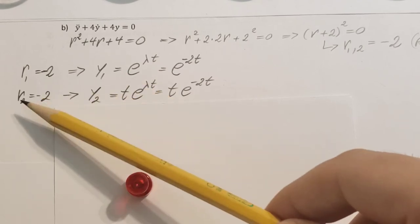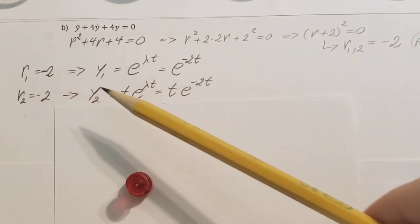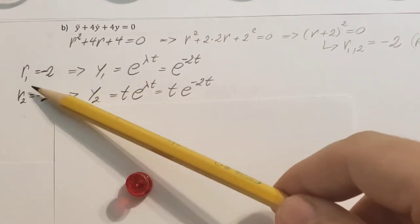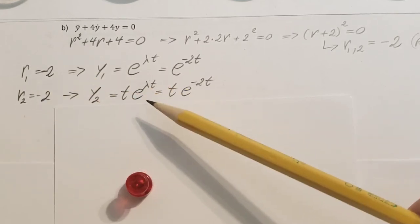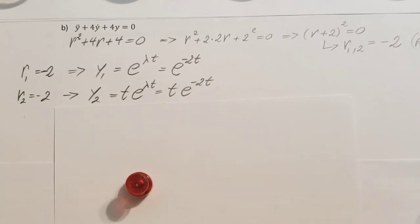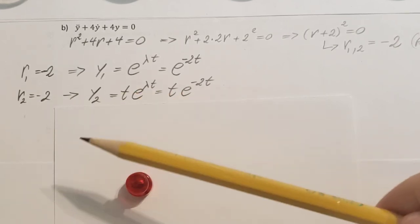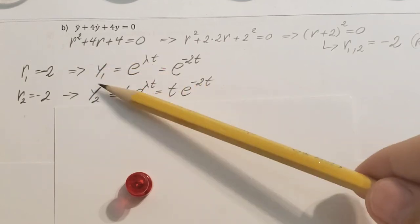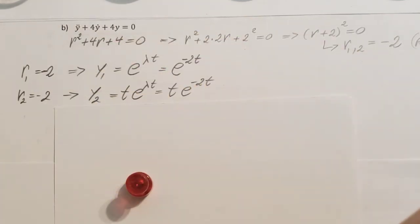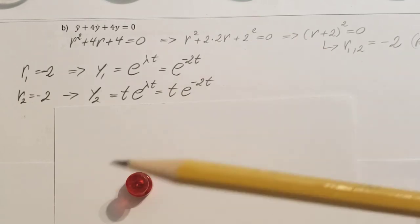If we would have a third root, then we would have to put, for the second one, the t, and for the third one, t squared e lambda t. So it doesn't matter how many roots you have, you just keep adding more t's in front of it to make sure that none of your y's—y1, 2, 3, 4, whatever—will never be equal to each other.